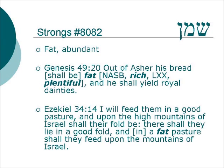It's also used as an adjective. Genesis 49.20: Out of Asher, his bread shall be fat — or, as the NASB says, rich, and the Septuagint says plentiful — and he shall yield royal dainties. Very interesting, because here in Jacob's prophecy over his twelve sons, Asher again is associated with this Shemen.